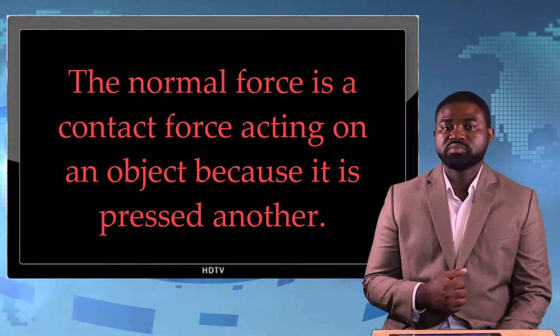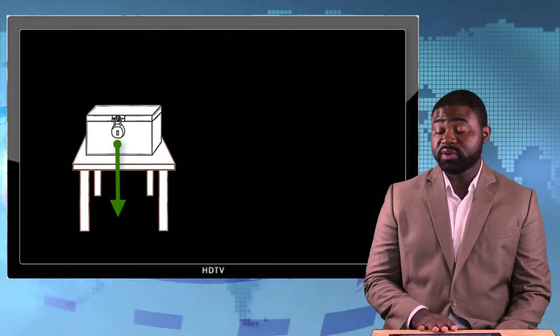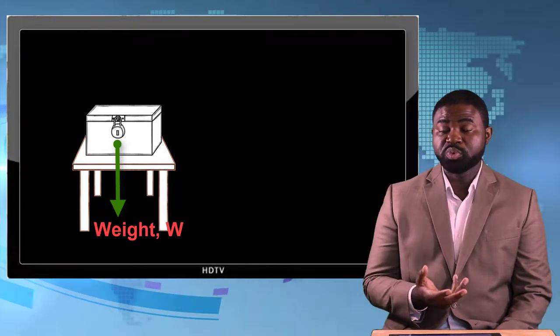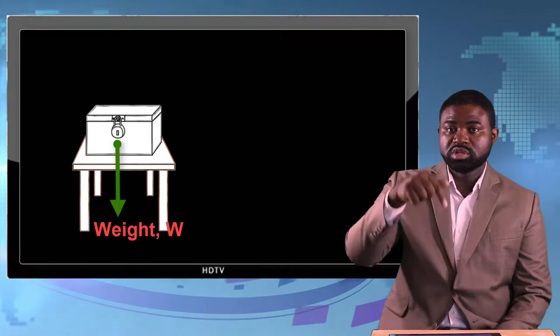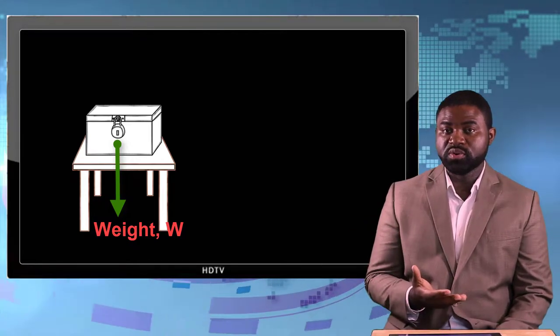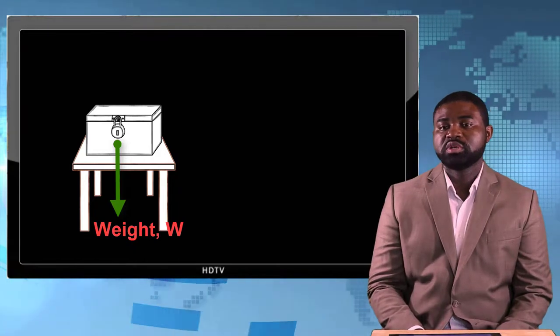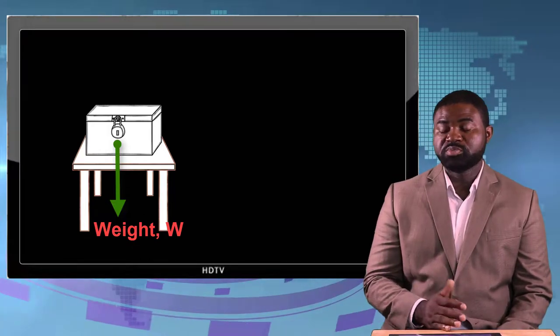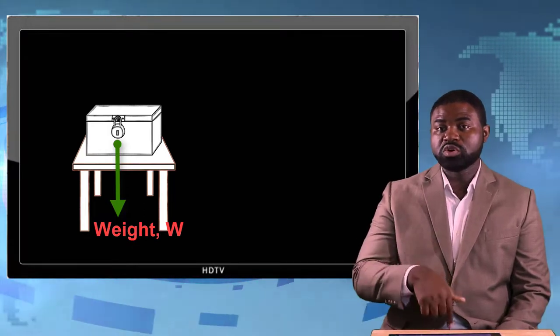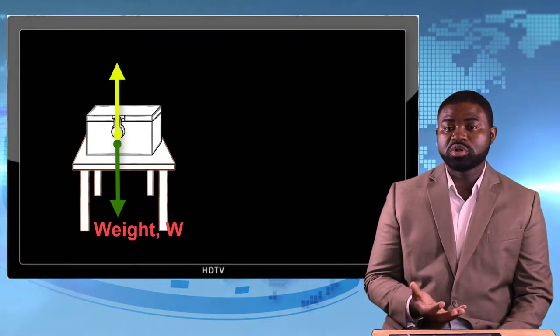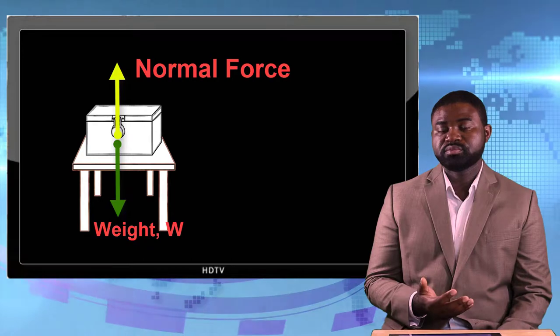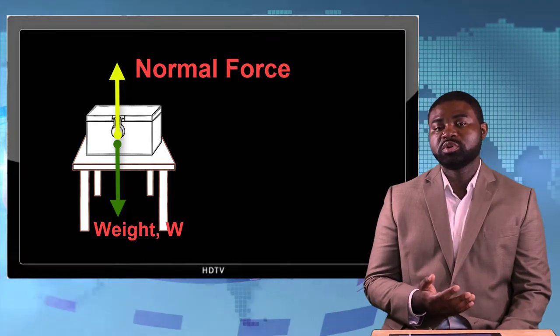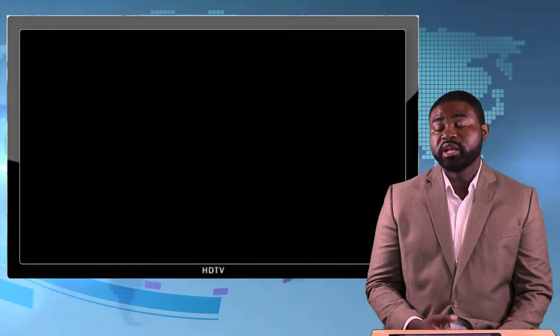For example, consider a crate that rests on a flat surface. Obviously the crate has weight because the Earth is pulling it downwards. The gravitational pull of the Earth on the crate is downwards, but the reason the crate itself is not falling through the Earth is because there is a force opposing that downward force, acting upwards. We call that force the normal force.